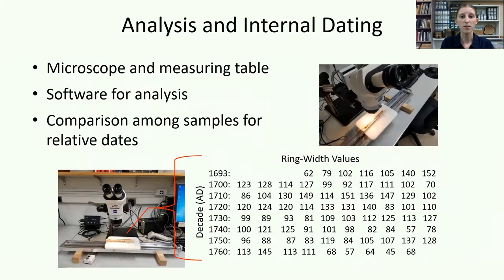After sample preparation, an analyst measures the width of each complete ring from the innermost oldest to the outermost youngest rings under a microscope, using a moving measuring table connected to a computer. Dendrochronology software, such as Tolero or Carina, records the ring width measurements in microns.